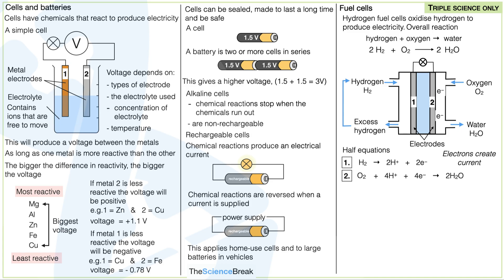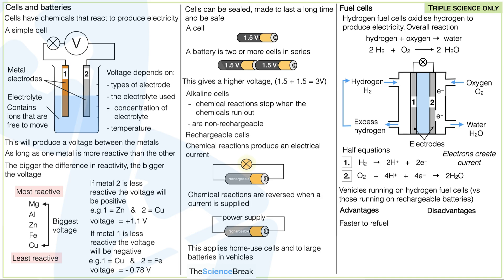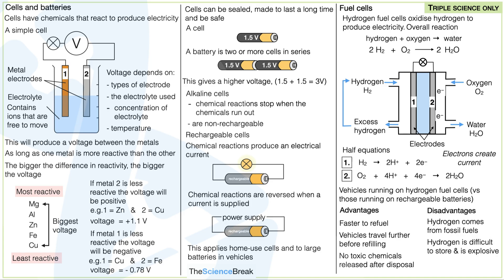A common exam question is to evaluate hydrogen fuel cells versus rechargeable cells. Advantages of hydrogen fuel cell vehicles: they are faster to refuel (you only need to add more hydrogen), vehicles travel further before refueling, and there are no toxic chemicals released when you dispose of the fuel cell. Disadvantages: hydrogen currently comes from fossil fuels which are non-renewable; hydrogen is difficult to store and is explosive so it must be compressed; and there are not yet many hydrogen refueling stations available.